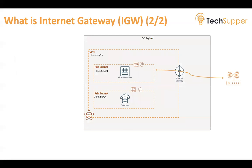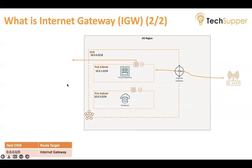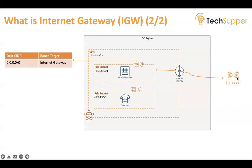For example, in this architecture we have one VCN with a public subnet and a private subnet. We create our resource — say a web server — in the public subnet, which will have an IP address. Users want to send traffic to the server and the server wants to communicate with the internet. That traffic will flow via the Internet Gateway. In the routing table, the destination is 0.0.0.0/0 and the target will be Internet Gateway.